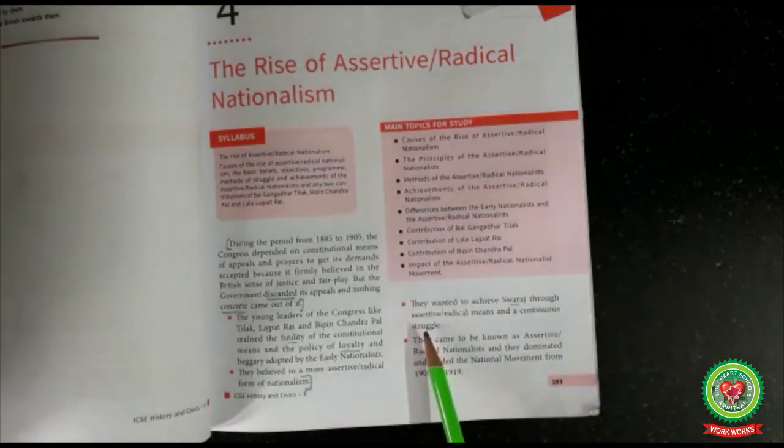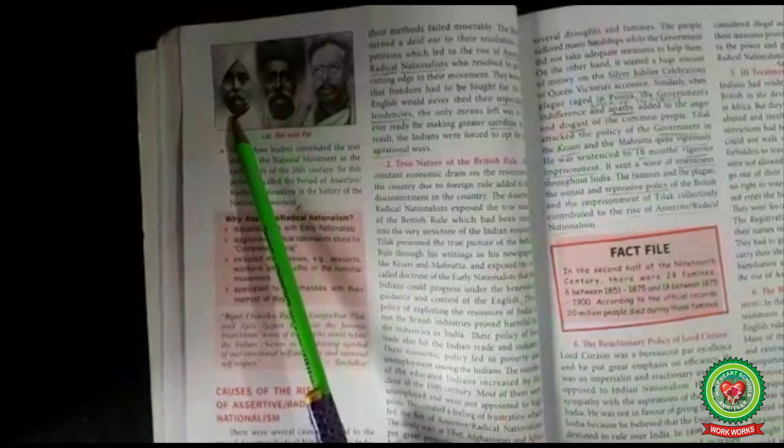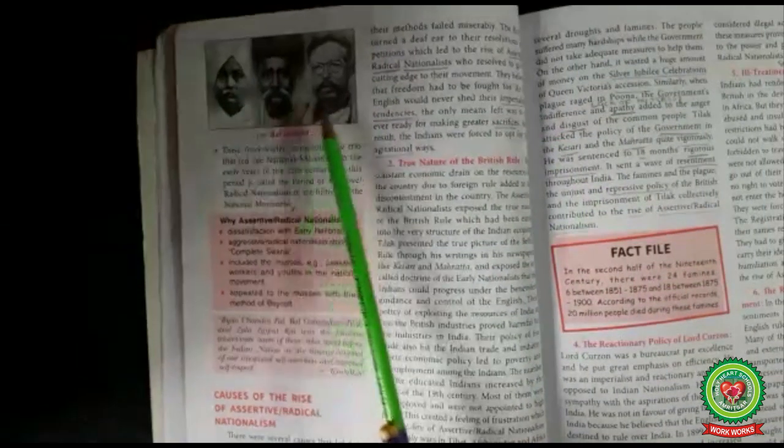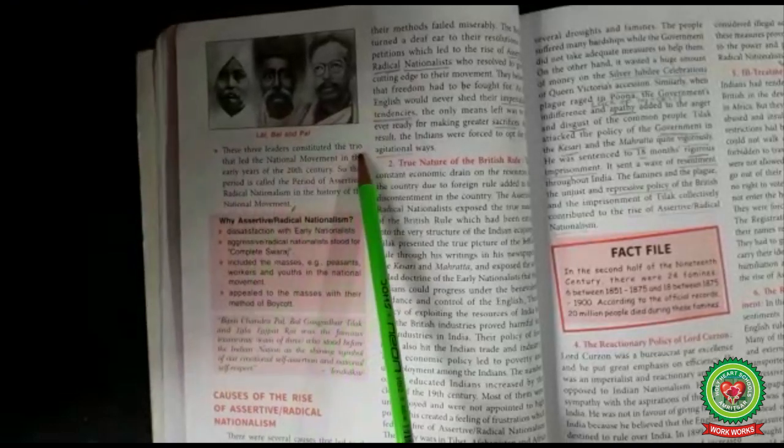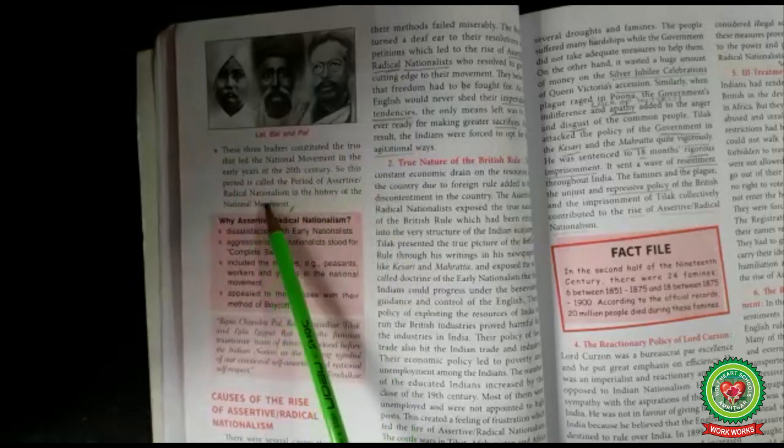Just have a look at the pictures: Lala Lajpat Rai, Bal Gangadhar Tilak, Bipin Chandra Pal — known as the assertive nationalists. These three leaders constituted the triumvirate — a group of three leaders — and led the national movement in the early years of the 20th century. This period is therefore called the period of assertive radical nationalism in the history of national movements.